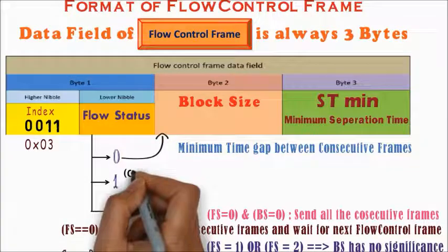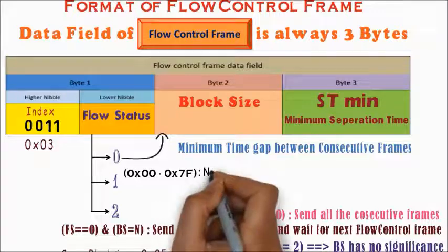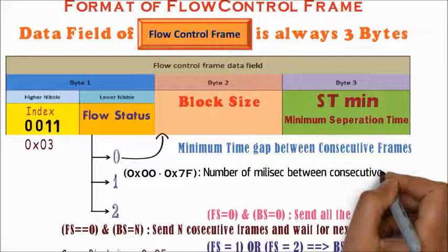Values from 0 to 127, that is hexadecimal 7F, specify the minimum number of milliseconds to delay between consecutive frames.